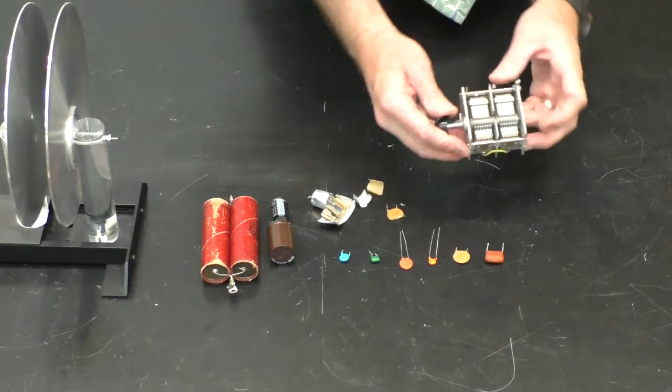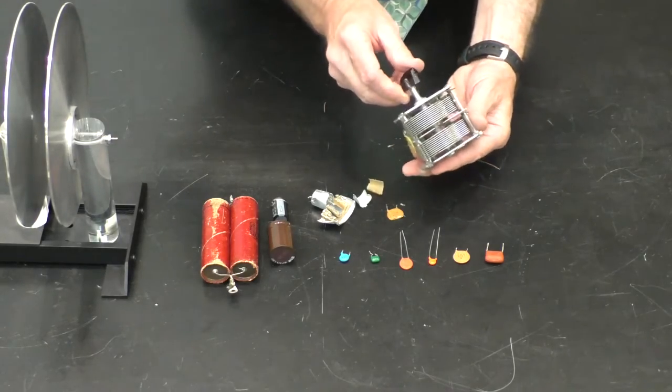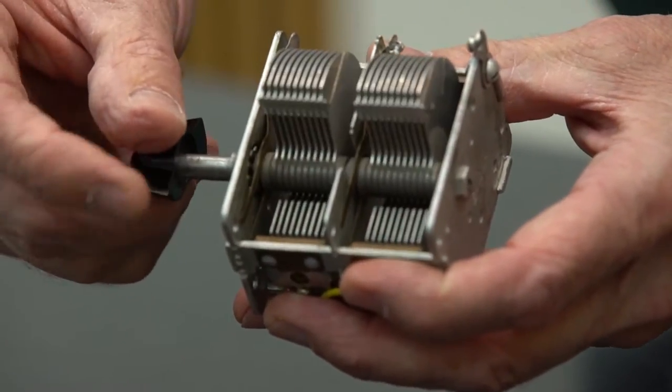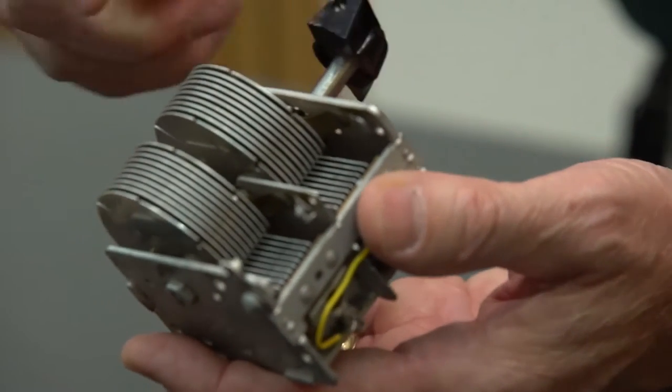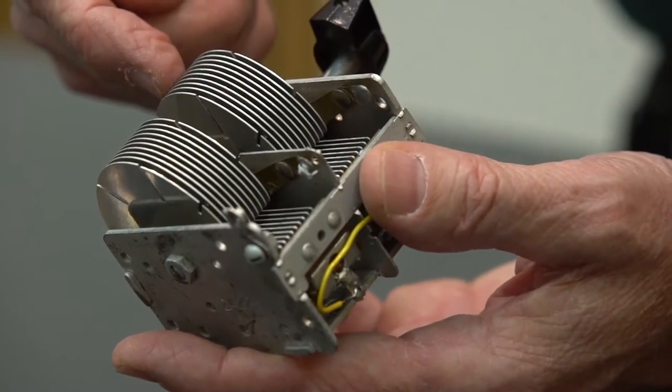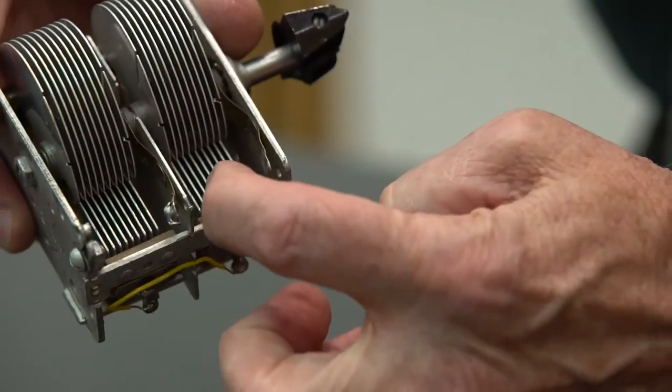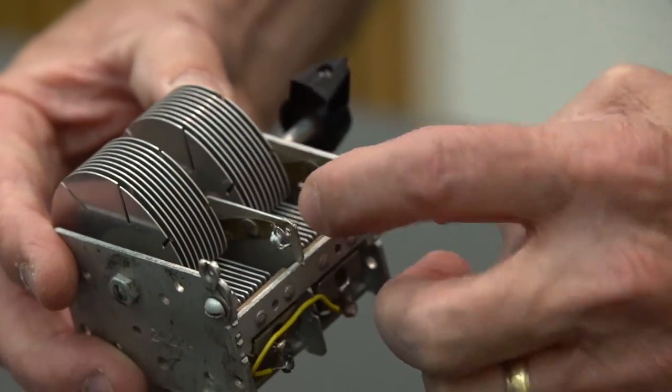This is what's known as a variable capacitor. In this position, there's a knob that helps you determine how much capacitance you have. In this particular position, these plates, which hold, say, a positive charge, are not overlapping with these other plates here that have negative charge.